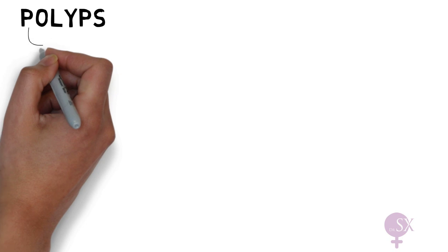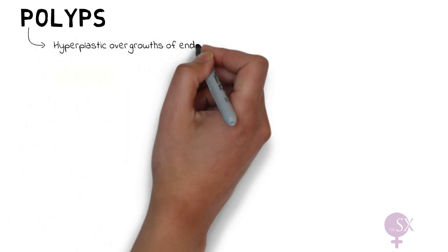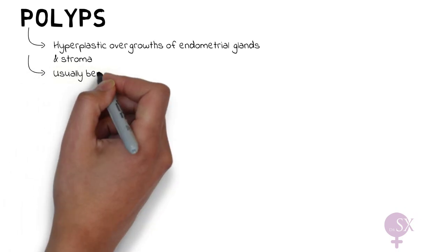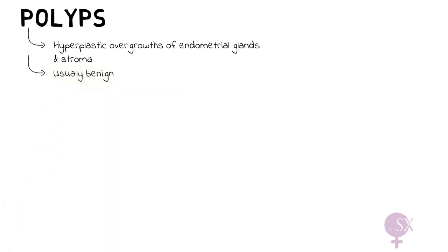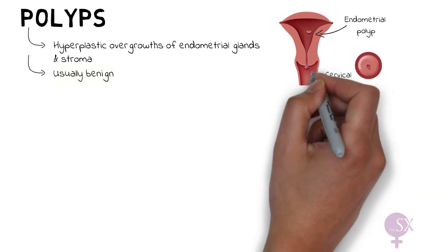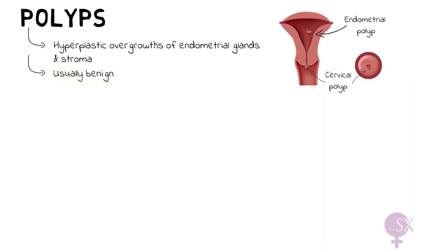Endometrial polyps are hyperplastic overgrowths of endometrial glands and stroma, and these are usually benign. They are most common in patients in their 40s and 50s. Polyps may arise from the endometrium — endometrial polyps — or the cervix, where we have cervical polyps. Sometimes, an endometrial polyp might prolapse through the cervix and might be mistaken as a cervical polyp.